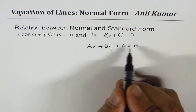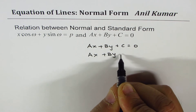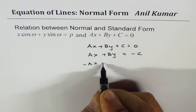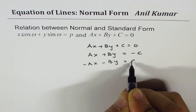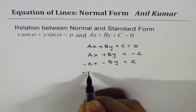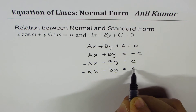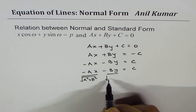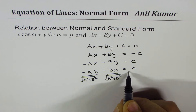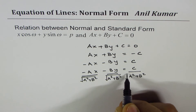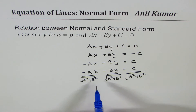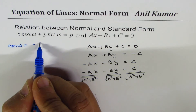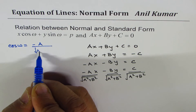Starting with the standard form Ax + By + C = 0, take C to the right side: Ax + By = −C. We want this to be positive, so we may need to multiply by −1 to get −Ax − By = C (positive). Then divide each term by √(A² + B²).